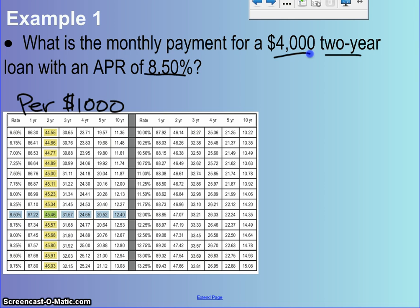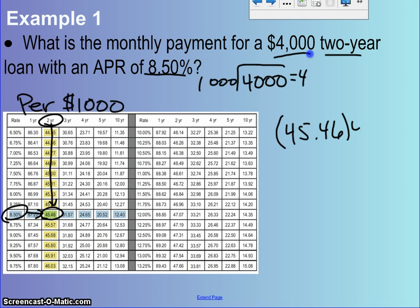It says here $4,000 two-year loan, so we're going to find two-year loan and a rate of 8.5%. Where it meets up, you see it's $45.46. That means if they got a $1,000 loan, it would be $45.46. But they got a $4,000 loan. So I'm going to take the $45.46 and multiply it by four for a total payment of $181.84.